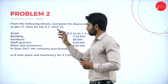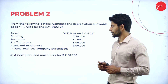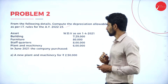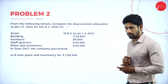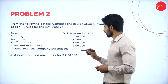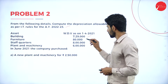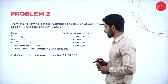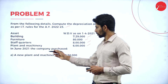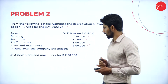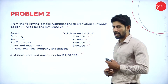Moving on to Problem number 2: from the following details, compute the depreciation allowable as per IT rules for the assessment year 2022-23. WDV as on 1-4-2021: Building — Rs. 7,29,000; Furniture — Rs. 80,000; Staff quarters — Rs. 8 lakhs; Plant and machinery — Rs. 6 lakhs. In June 2021, the company purchased new plant and machinery for Rs. 2,50,000.